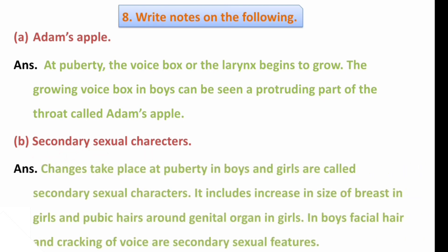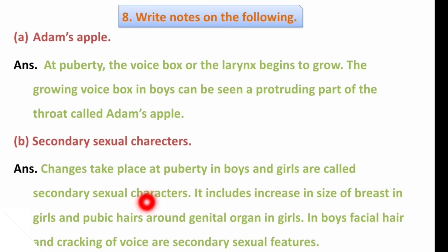Next: Secondary sexual characters. Changes that take place at puberty in boys and girls are called secondary sexual characters. These include increase in the size of breasts in girls and pubic hair around the genital organs. In boys, facial hair and cracking of the voice are secondary sexual features, helping us distinguish male from female.